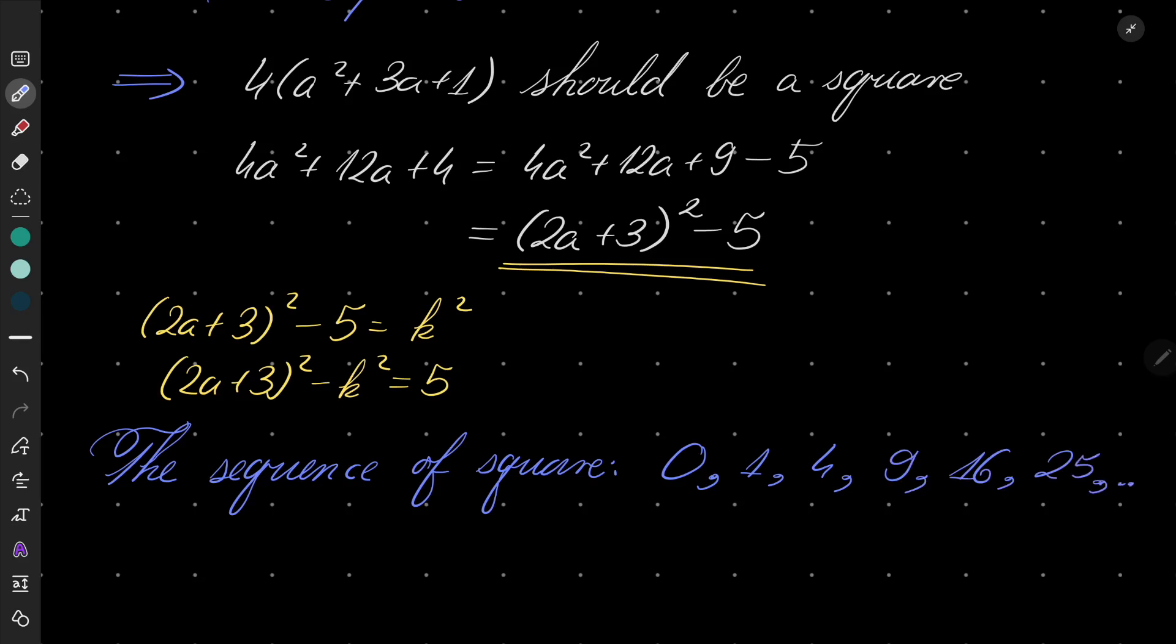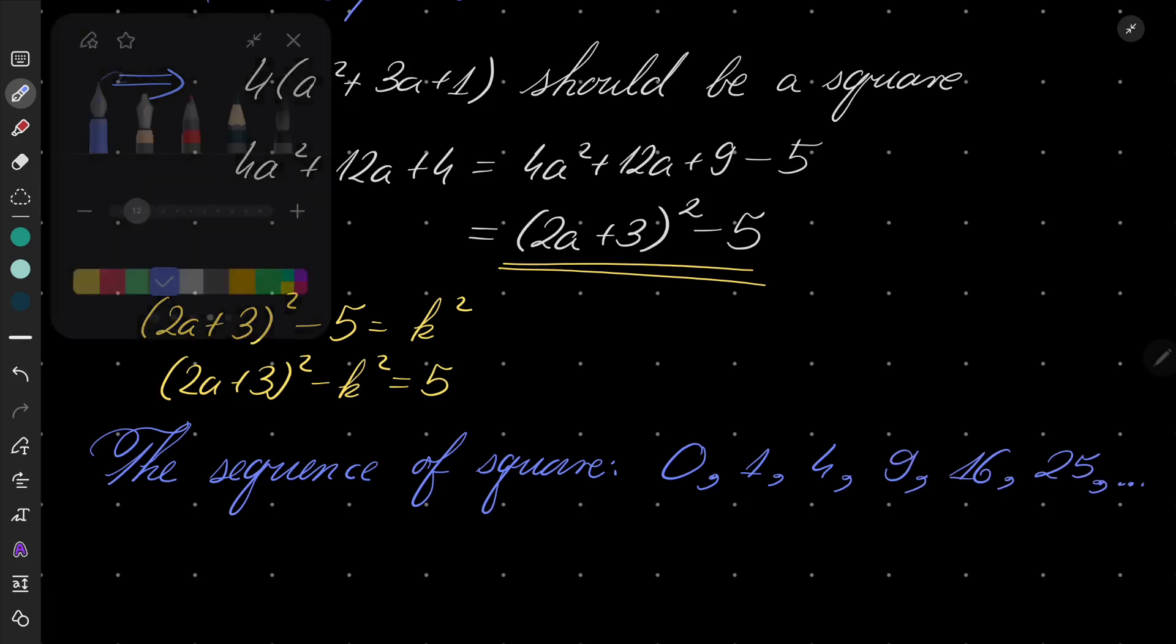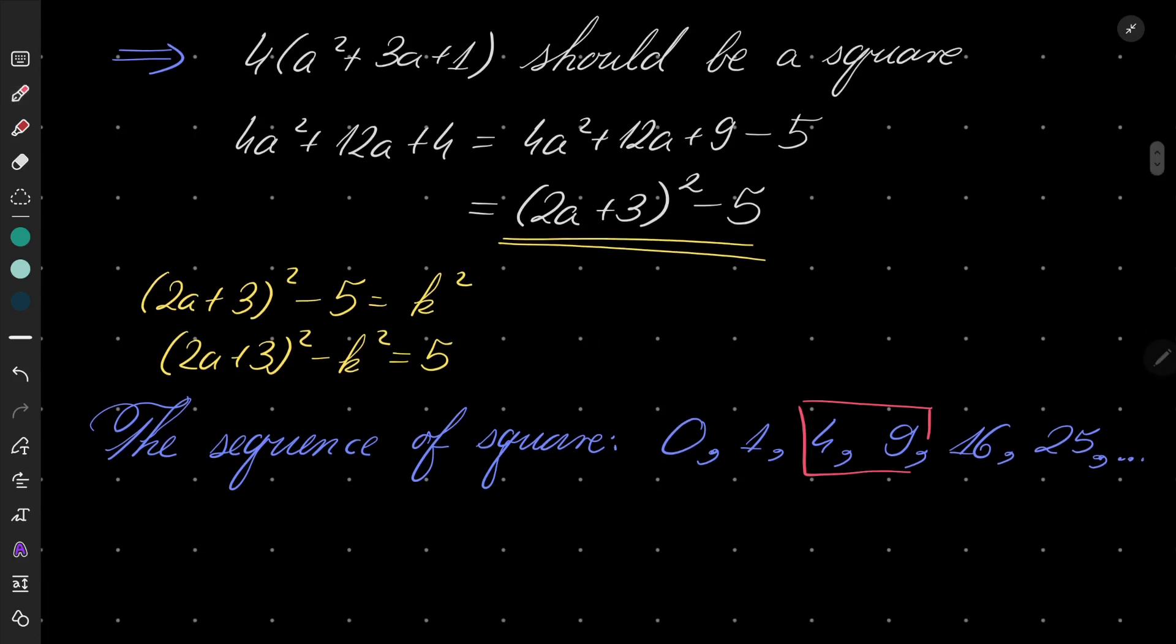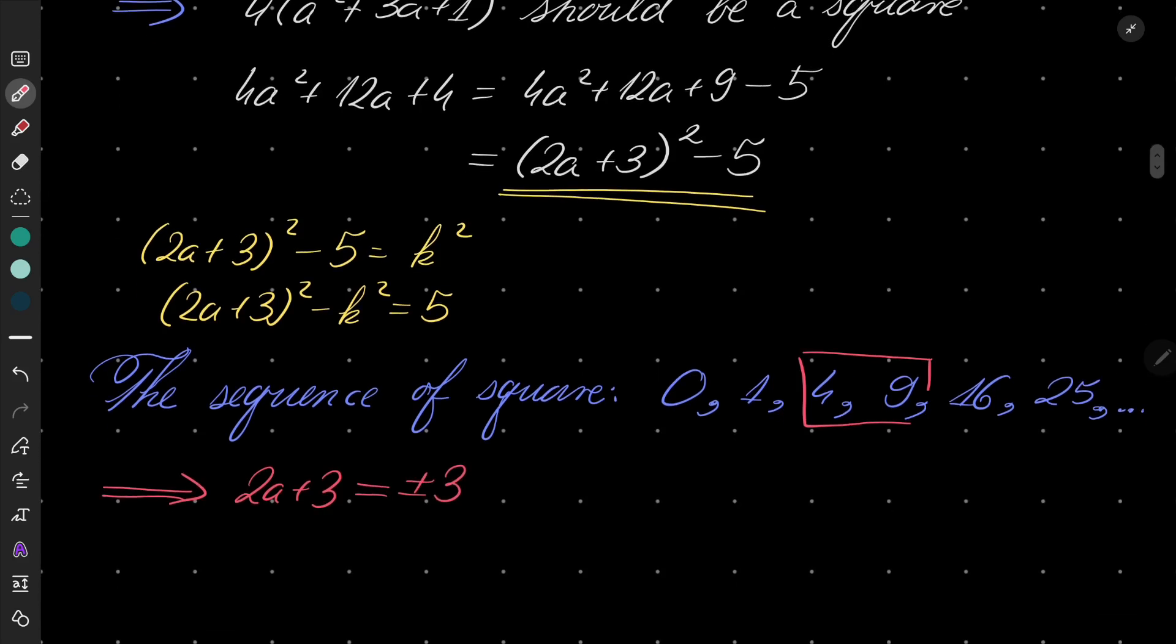And let's notice that the only two squares which are 5 units apart are 4 and 9, because as we go along this sequence, the distance between squares is increasing. The only place where the distance is 5 is between 4 and 9. Which means, which implies that 2a + 3 should equal plus or minus 3. Okay, which means that a is either 0 or a is -3.